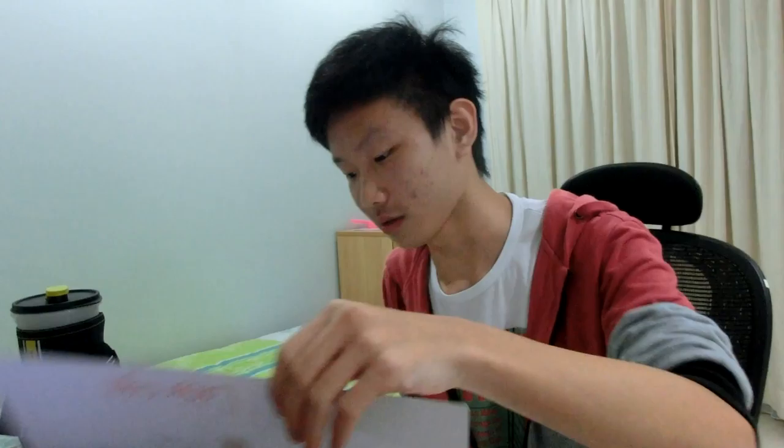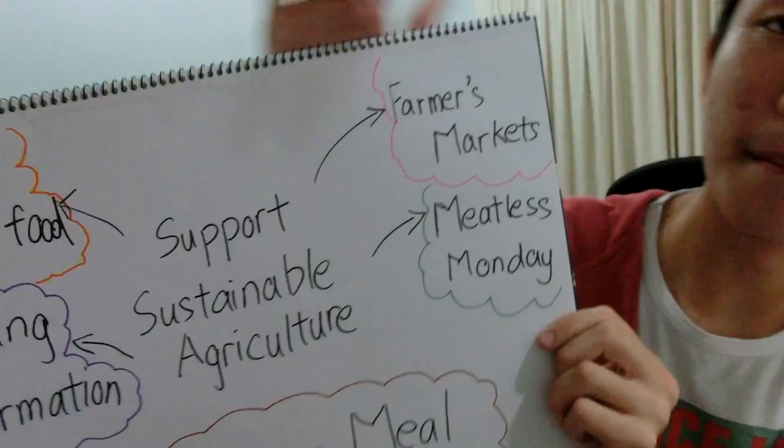so normal people and teenagers like us may feel we cannot do much. But there are some ways for us to help as well. One way is farmers markets — by visiting a farmers market,